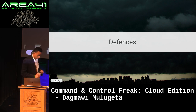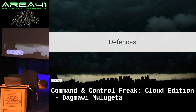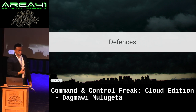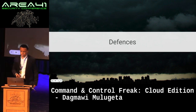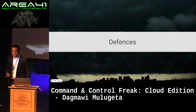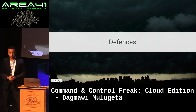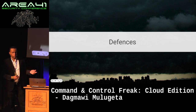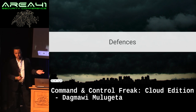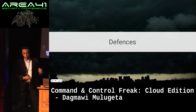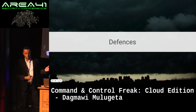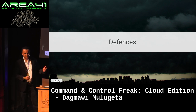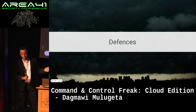Let's go over what we talked about from the beginning. We started by defining what Cloud C2 is — command and control that abuses cloud applications. Then we saw some trends happening in the wild today. We categorized some of these cloud apps and saw some features that are abused in each category as well.